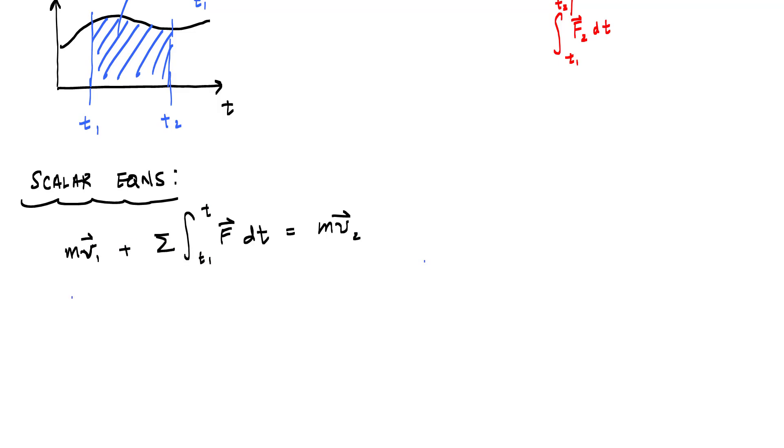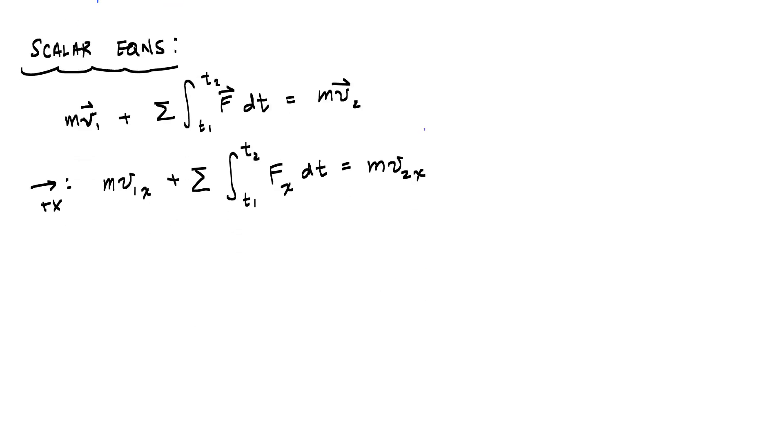Then you can look at, let's say, like a horizontal component. And if you call that the x direction, then this would be like mv1x plus the sum of all the impulses in the x direction is equal to the x component of the momentum. And then similarly, in the y direction.